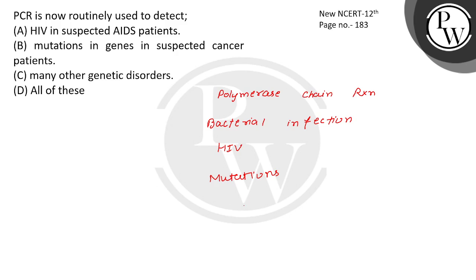PCR is a powerful technique with which you can detect genetic disorders. PCR is now routinely used to detect: HIV in suspected AIDS patients, mutations in genes in suspected cancer patients, and many other genetic disorders. This is option D. Refer to NCIT class, page 183.